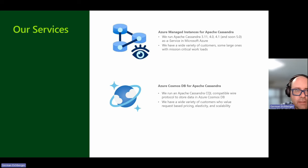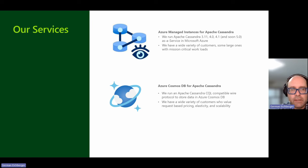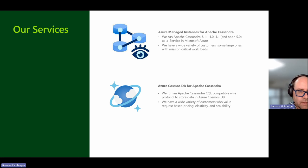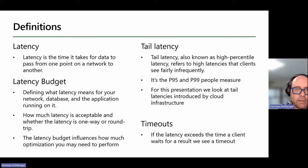Let's see what services we run here in Azure. We have Azure Managed Instance of Cassandra, which is basically open-source Cassandra — versions 3.11, 4.0, 4.1, and 5.0 alpha 2 as a service. The other service I'm responsible for is a translation layer that translates CQL to Cosmos DB. But we will focus on the open-source Cassandra service.